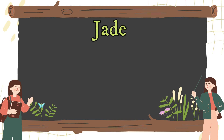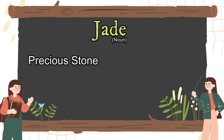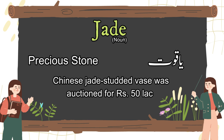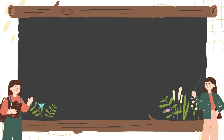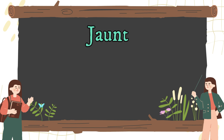Jade is a noun. Its English meaning is precious stone. If we see its Urdu meaning, that is yakut. The second word for the day is jaunt. This is a verb.